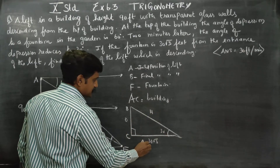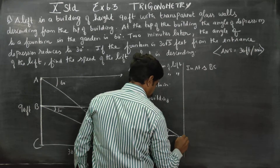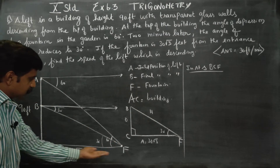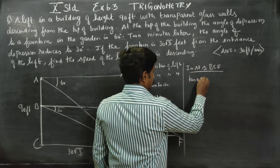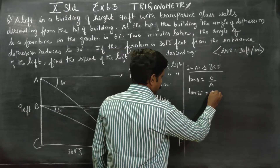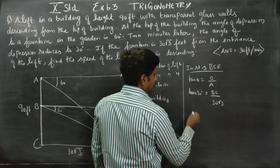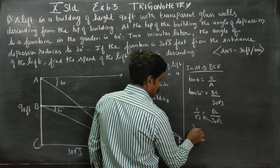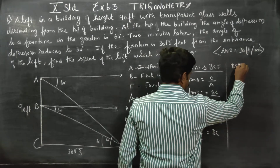I am going to use the right triangle. In right triangle BCF, those are the smaller triangles. The bigger triangle is all measured. Opposite and adjacent are identified. I am going to use tan theta. Tan theta equals opposite by adjacent. Tan theta — theta equals 30 degrees. My opposite is BC and adjacent is 30 root 3. Tan 30 equals 1 by root 3. So 1 by root 3 equals BC by 30 root 3. Cross multiply: 30 root 3 divided by root 3 equals BC. Root 3 cancels, therefore BC equals 30 feet.